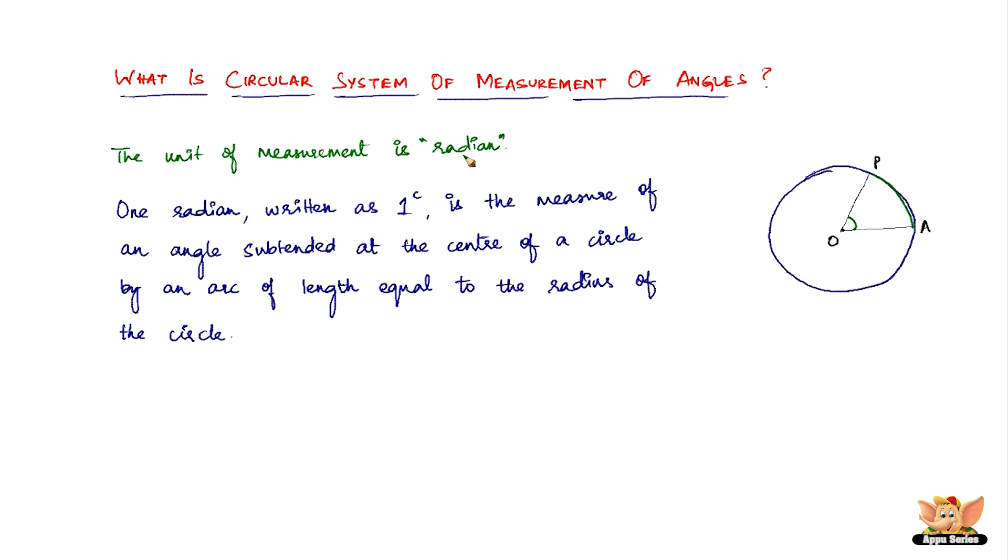Whatever you measure is written in terms of 1 radian or 2 radian or 3 radian. So in this case the measure of angle AOP, the definition of 1 radian is that this angle AOP measures 1 radian if the arc PA is equal to the radius OA.